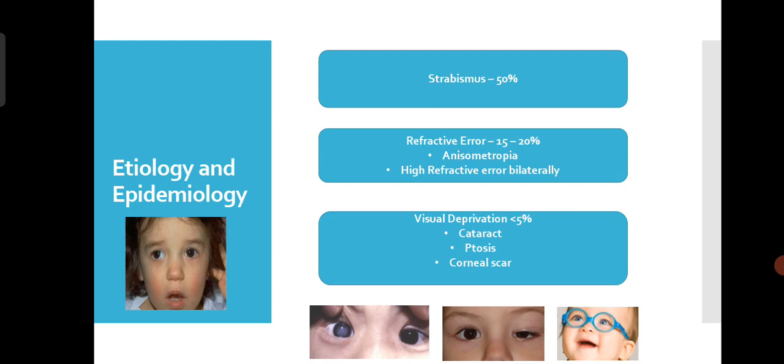Due to visual deprivation, stimulus deprivation Amblyopia occurs in less than 5% of cases. The child may have a congenital cataract or a corneal scar, so visual stimulus is not reaching the weaker eye, causing Amblyopia.